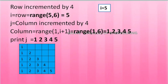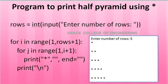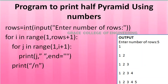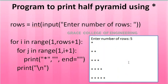Now you know the concept of how to print the half pyramid. You can also print the half pyramid using a star. It's the same program — instead of printing j (the column value), you replace it with a star. So all printed values will be stars. The concept is the same.